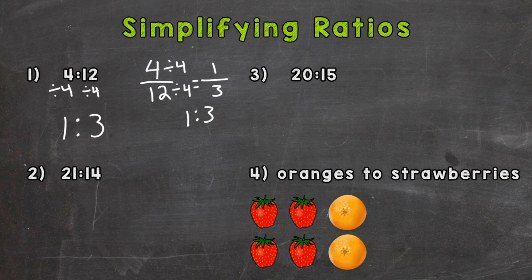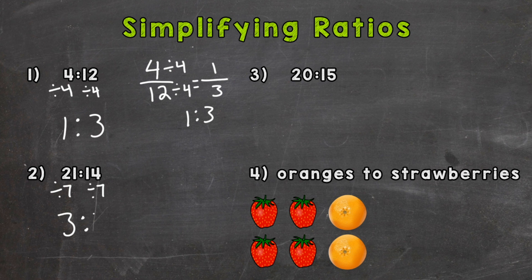Let's take a look at number 2: 21 to 14. The greatest common factor between the two would be 7. So let's divide both of them by 7, and we get 3 to 2.